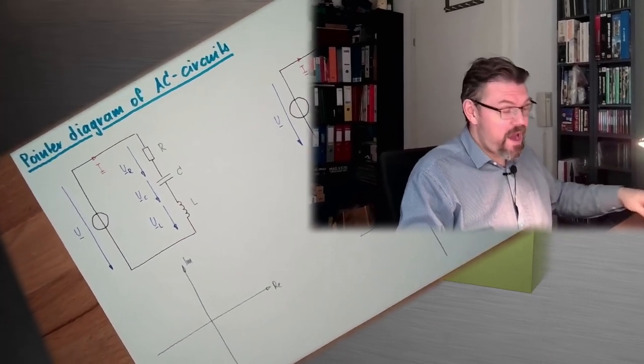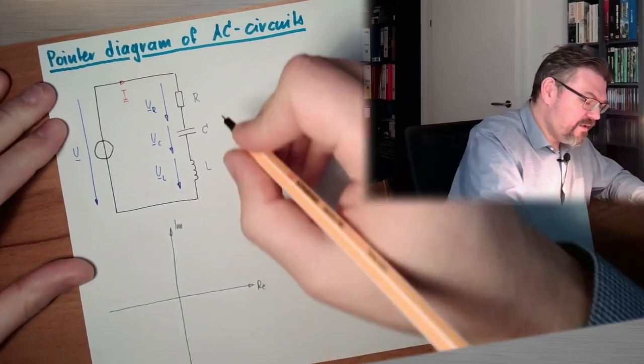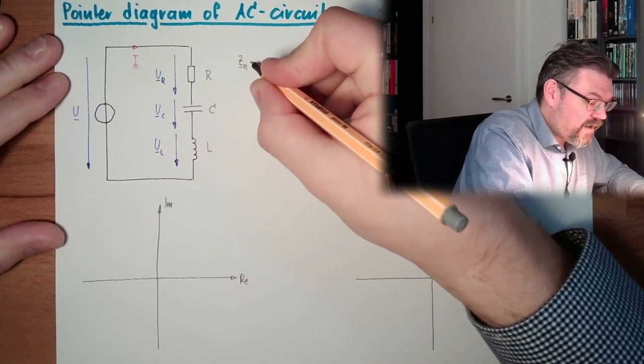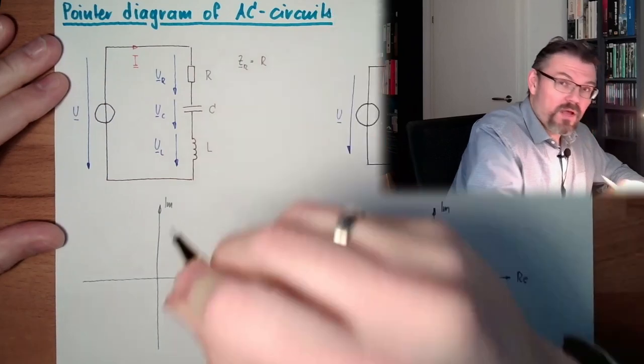Every element had a certain resistance. So we had a resistor, a capacitor, a coil, and we said everything is acting like a resistance. And those resistances were that the complex resistance, the impedance. It was called ZR from a resistor was R plus J0.